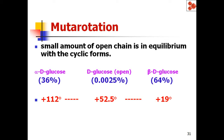But when you keep the alpha-D-glucose solution or beta-D-glucose solution for 5–6 hours, or perhaps one day in the refrigerator, and you measure it the next day, the optical rotation is neither 112 degrees nor plus 19 degrees. Surprisingly, the optical rotation of the solution becomes 52.5 degrees. Scientists questioned how this optical activity changed, and they understood that the interconversion of alpha-D-glucose to beta-D-glucose takes place via D-glucose formation.